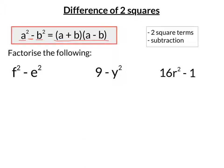Let's see some examples. So the first one is f squared minus e squared. Well, definitely two squared terms that are being subtracted. So using that formula above, we're going to get f plus e and f minus e.